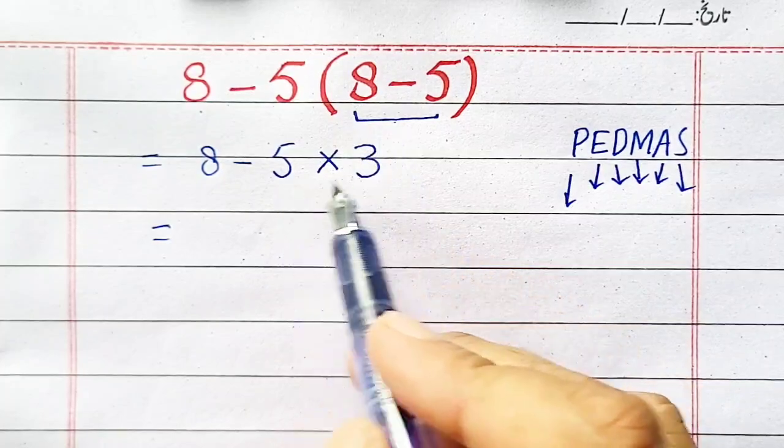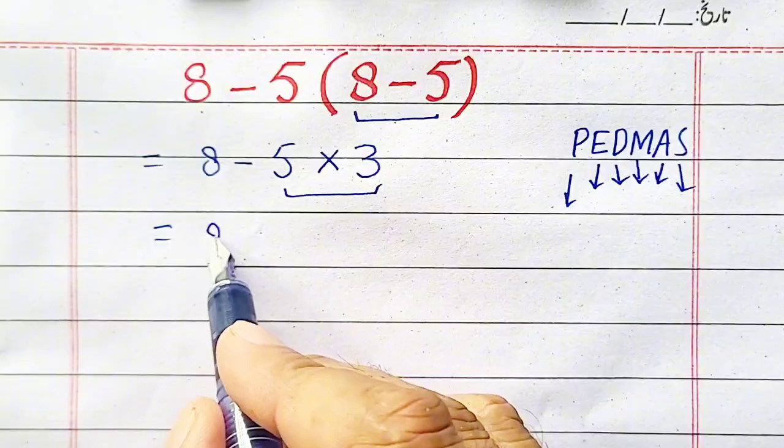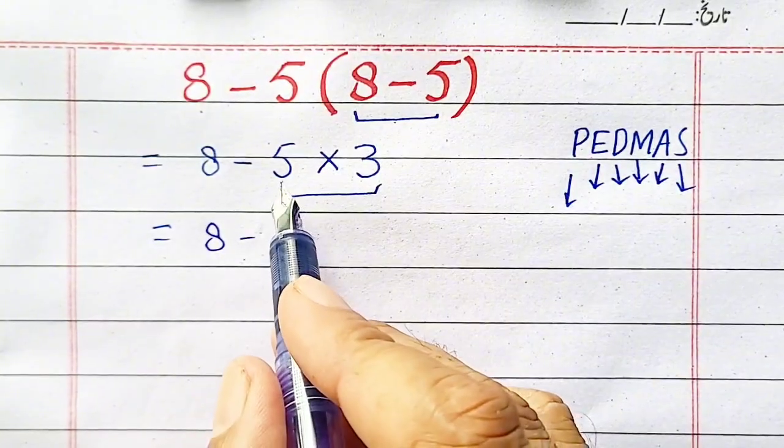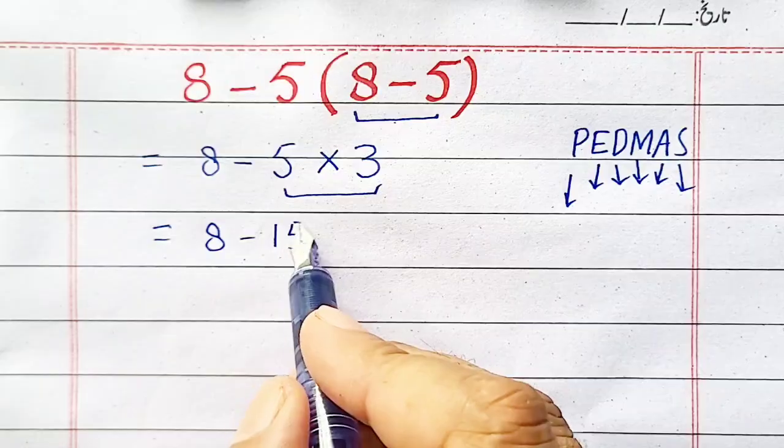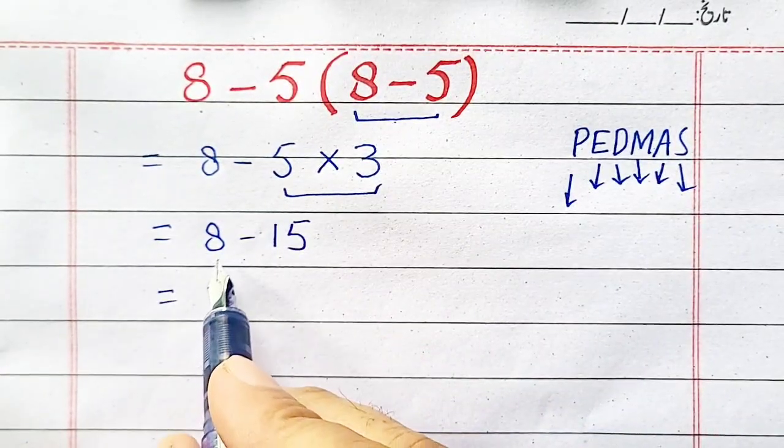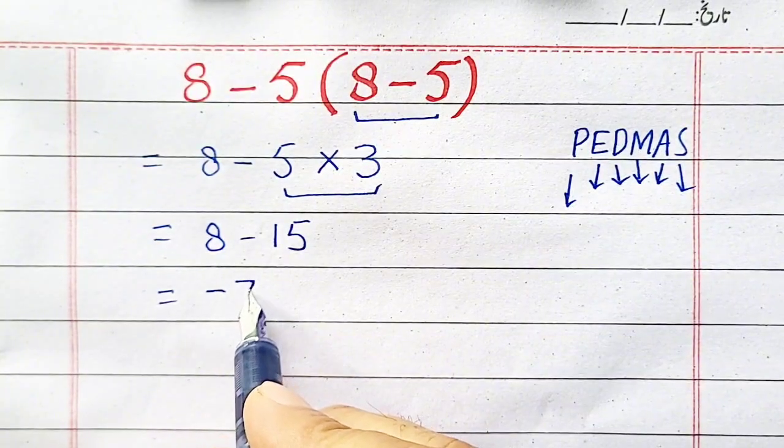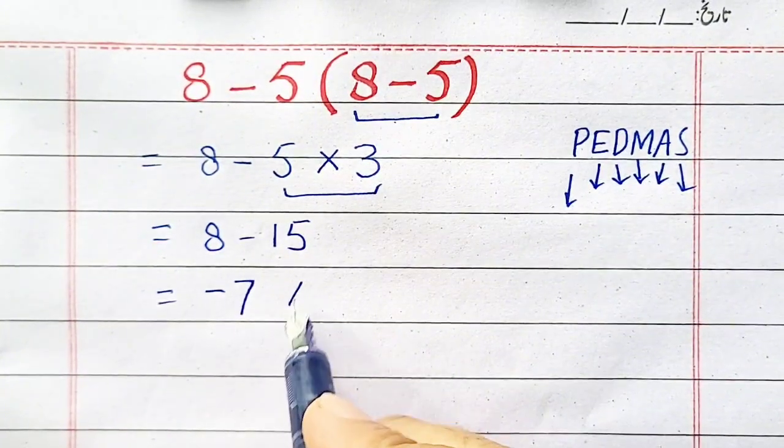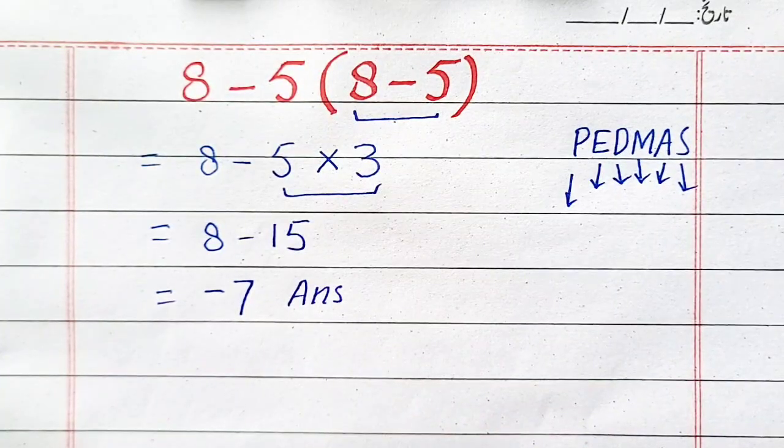Now we will multiply these two numbers. So, 5 multiplied by 3 equals 15. Therefore, our answer is 8 minus 15 equals minus 7. So minus 7 will be your answer. Thank you.